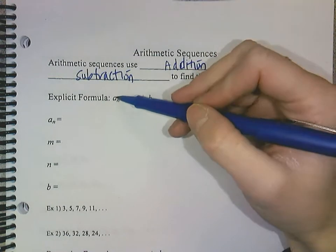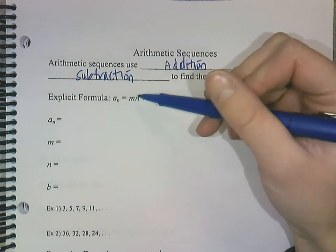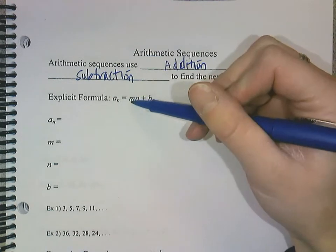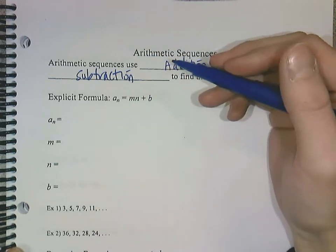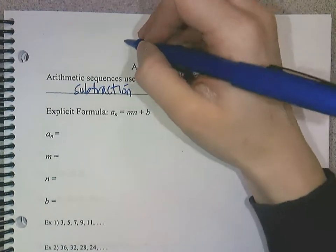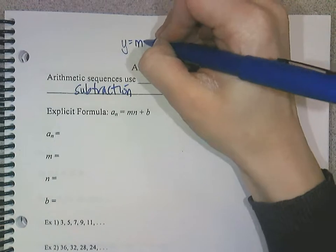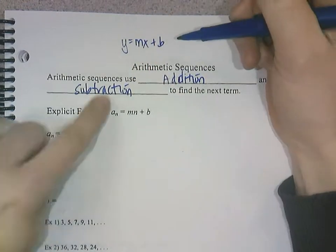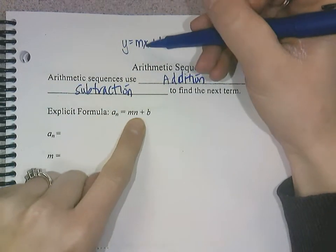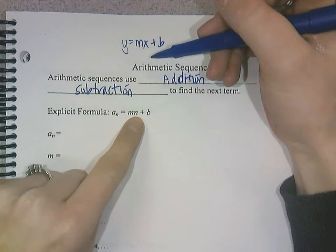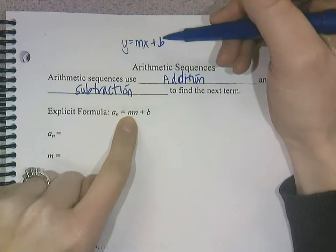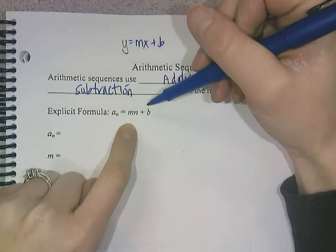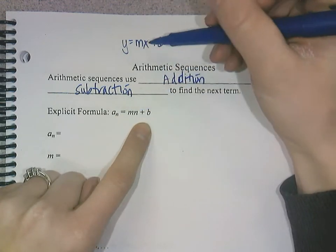Okay, so this is the formula, a sub n equals mn plus b. So this m and this b are very similar to our slope, our y-intercept formula. If you remember way back when, y equals mx plus b. So notice the y would be our a sub n, and then we have our m and our n, which is going to be our term, and then our b, which is our beginning. So it's really similar, which is how we get the explicit formula, and that's why we have an m and a b, because it matches.